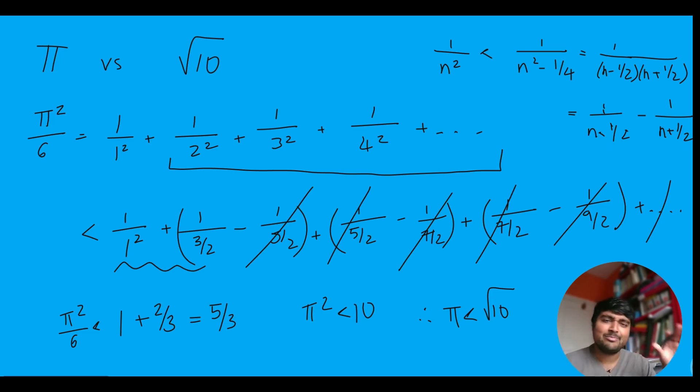In fact, the square root of 10 is something like 3.16. Pi is 3.14 roughly. So it's actually quite close to each other. So it was actually a very tight squeeze, which we managed to prove here.